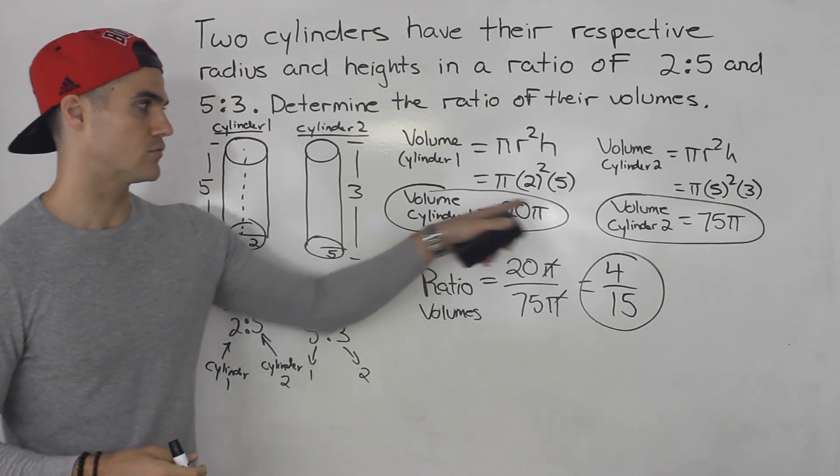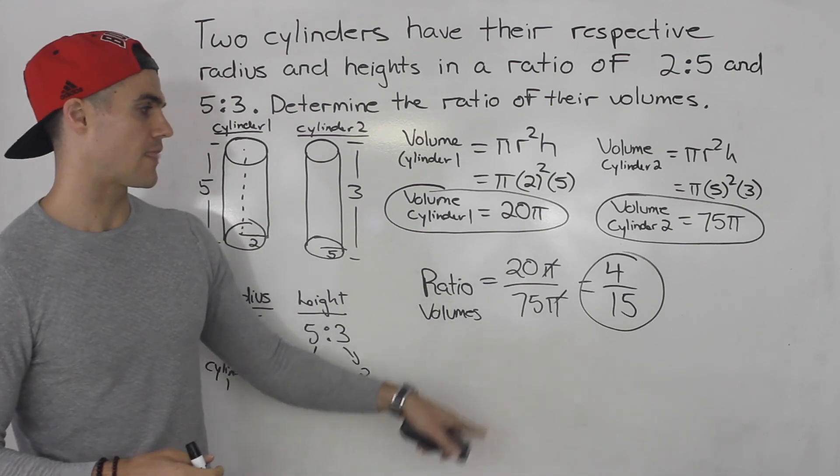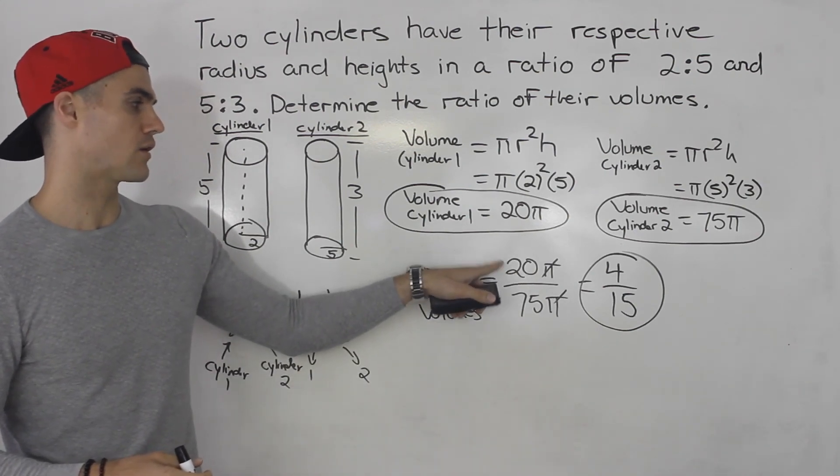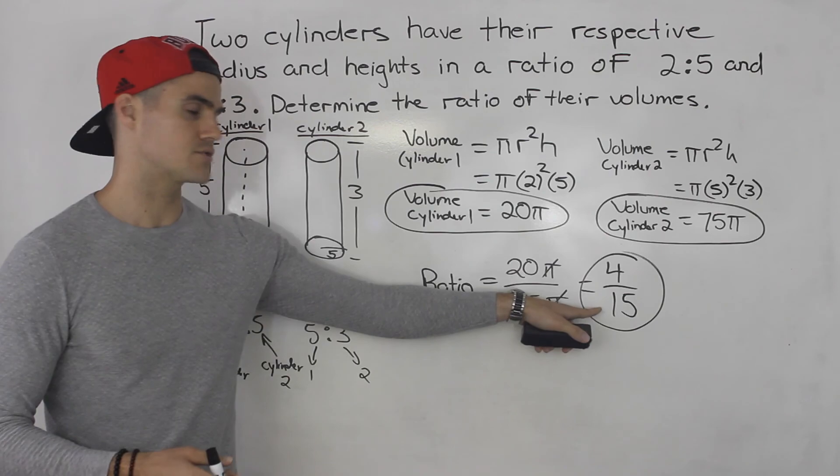So you first want to find the volume for each one, and then you could put the volume of one of them over the other, and then reduce it.